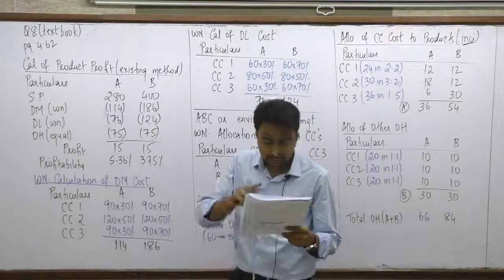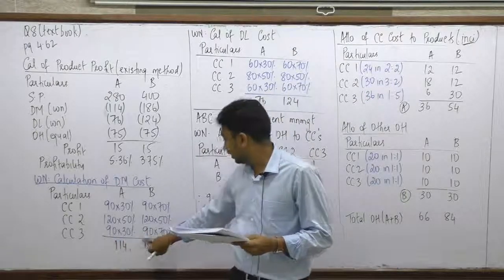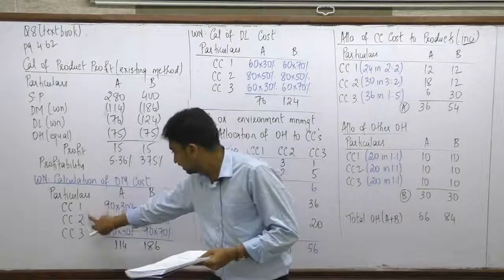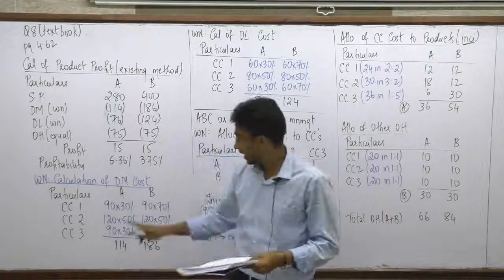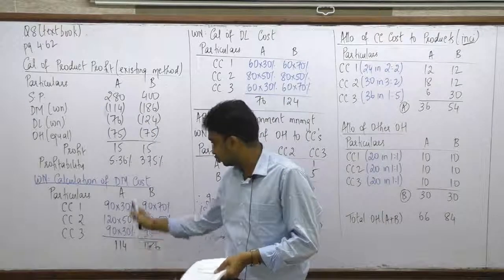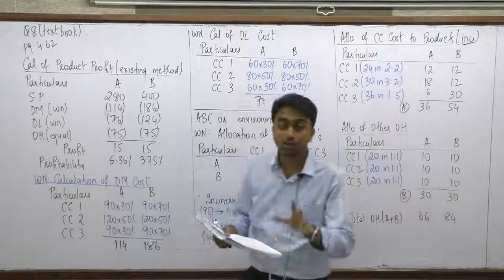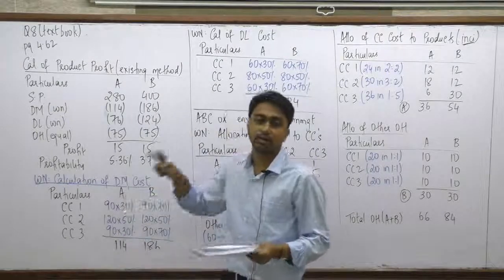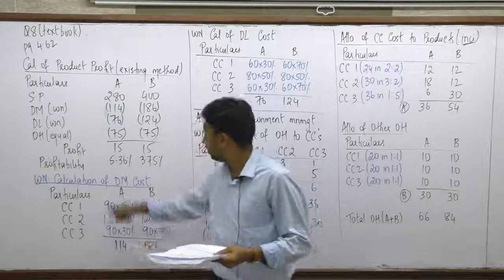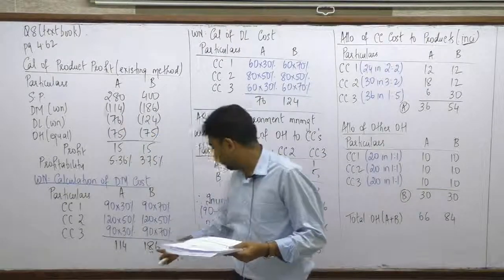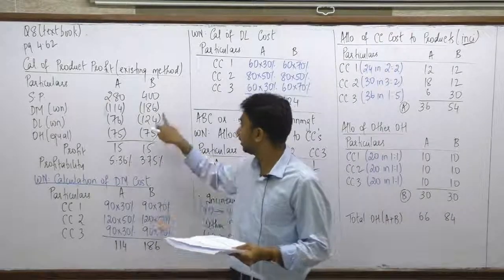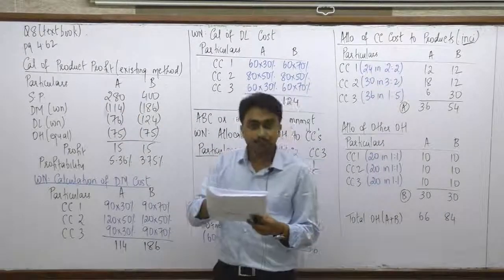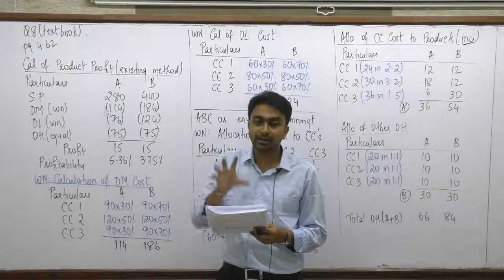Adding up all the column values: Grade A's total direct material cost is ₹114, and Grade B's is ₹186. Together, 114 + 186 = ₹300, which confirms we have simply allocated the total DM cost of ₹300 between the two products. This is the entire working for direct material.